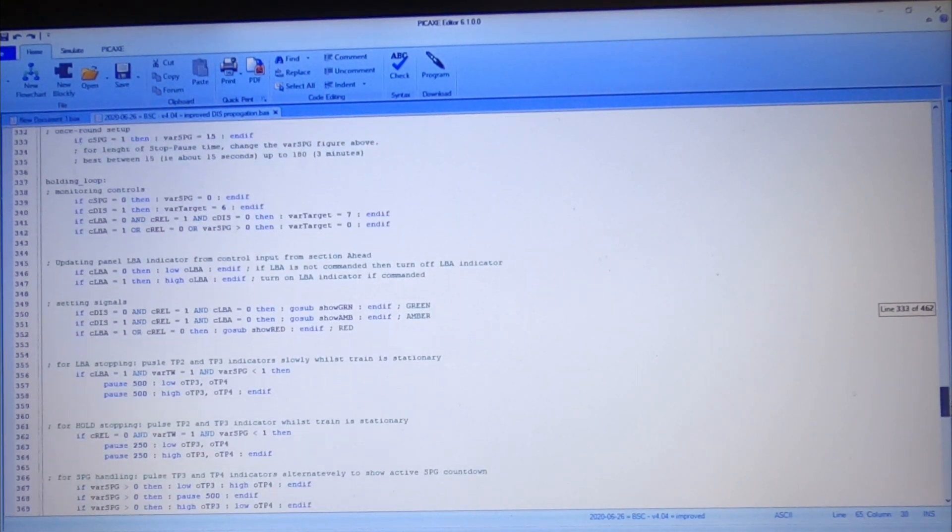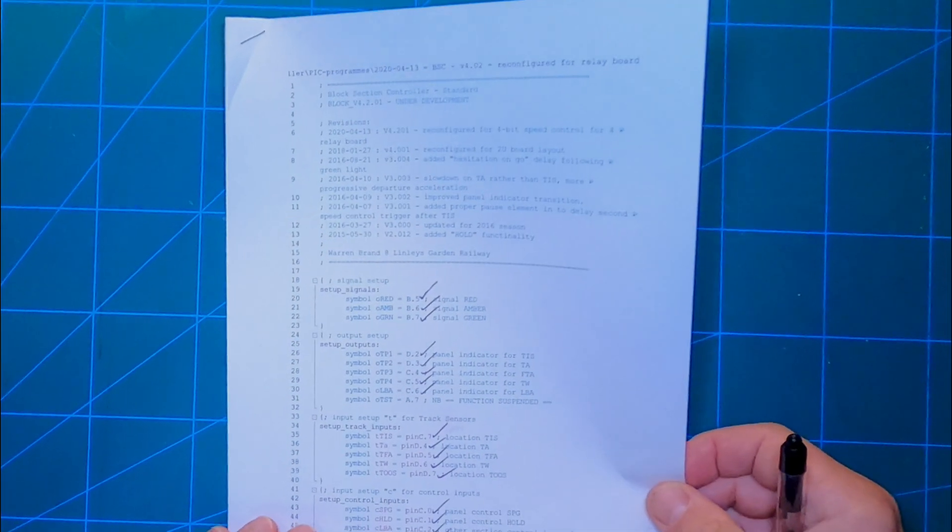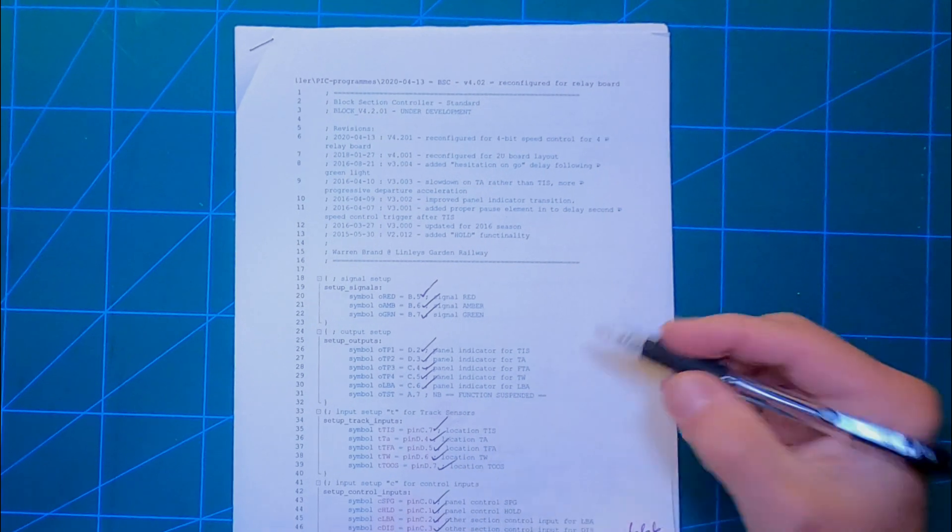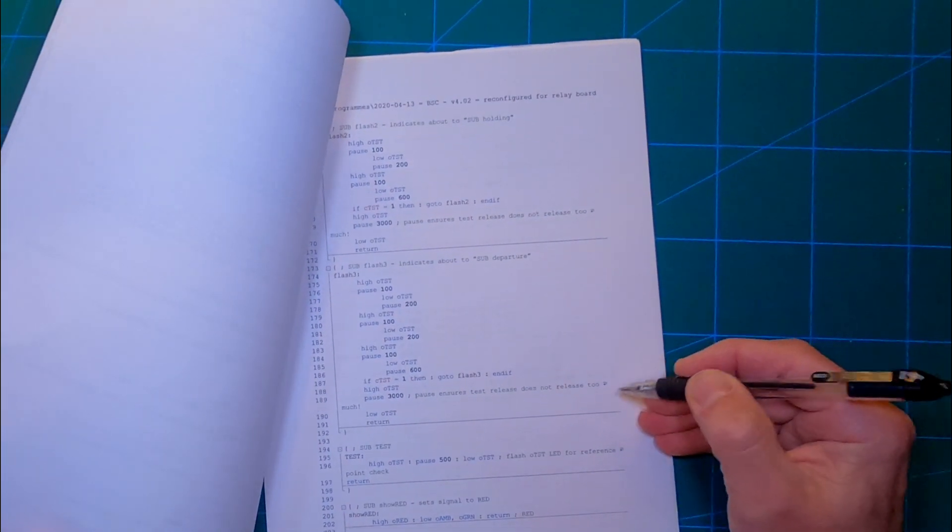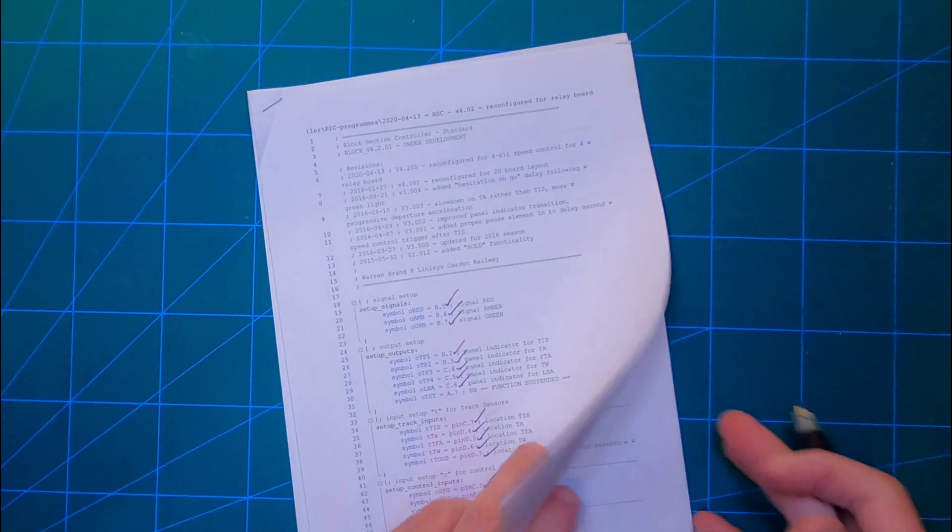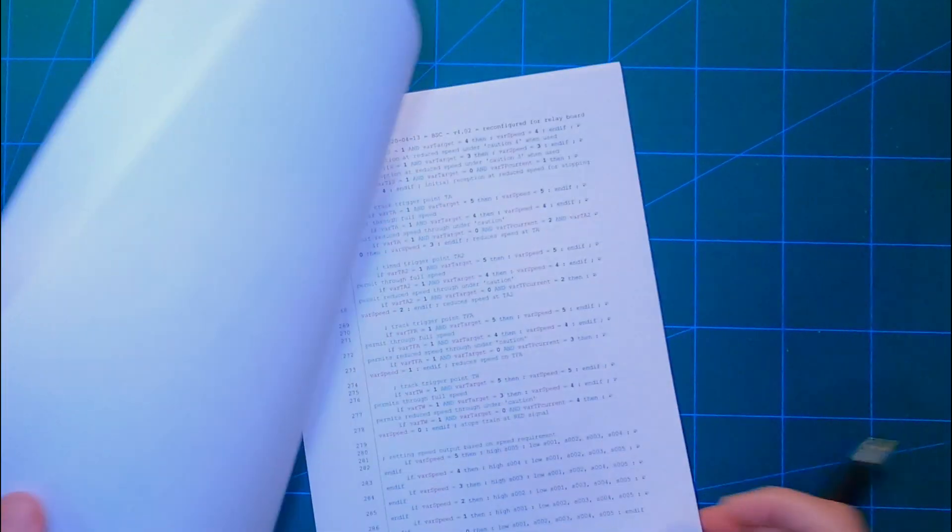Currently there are hundreds of lines of code in the program, but broken down into chunks or subroutines. The main routine rapidly calls a set of subroutines which themselves have certain jobs to do. One subroutine, for example, is responsible for setting the correct aspects of the signal lights depending on the conditions stored in memory.